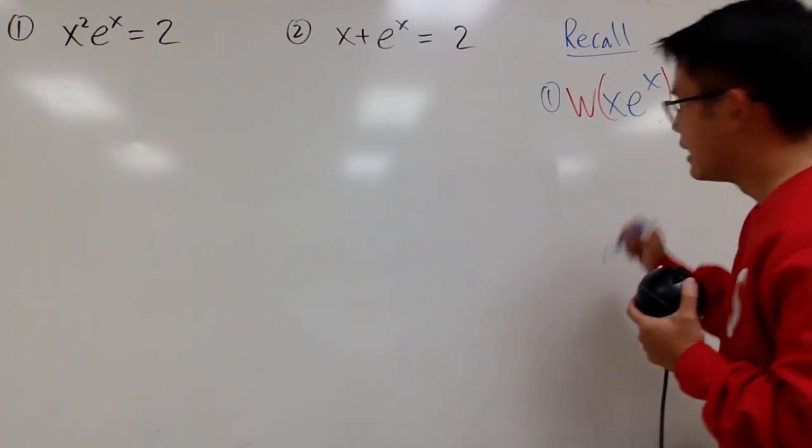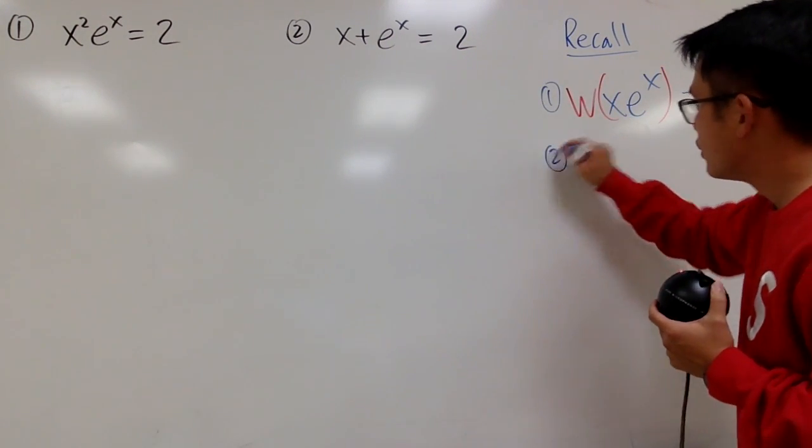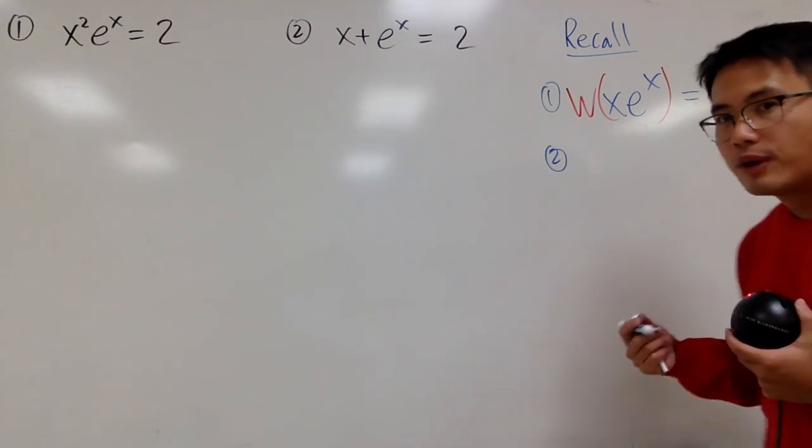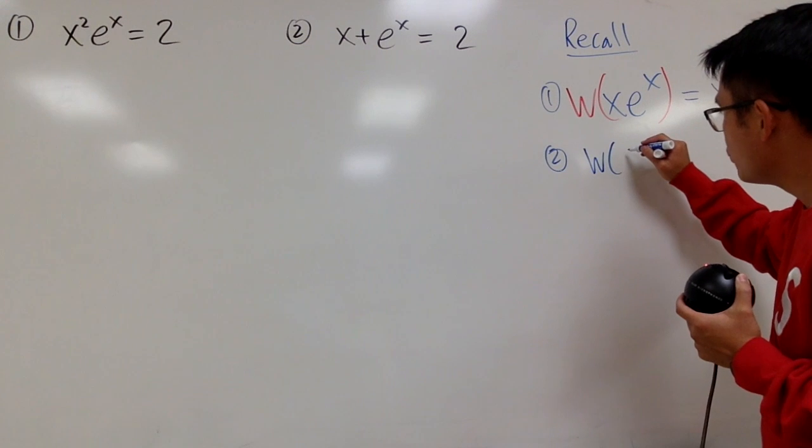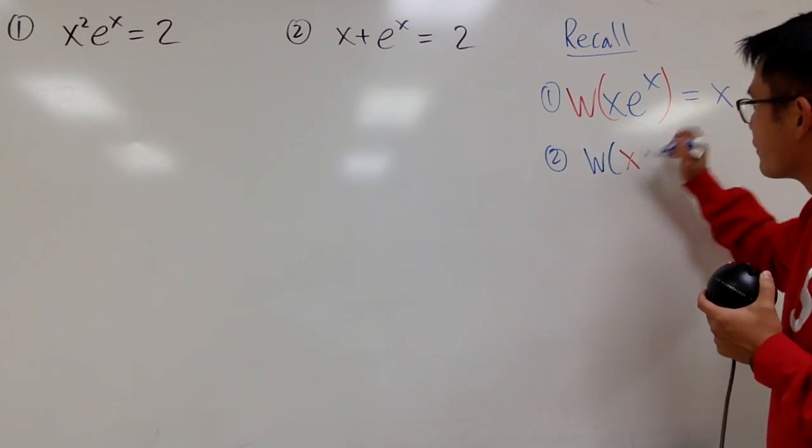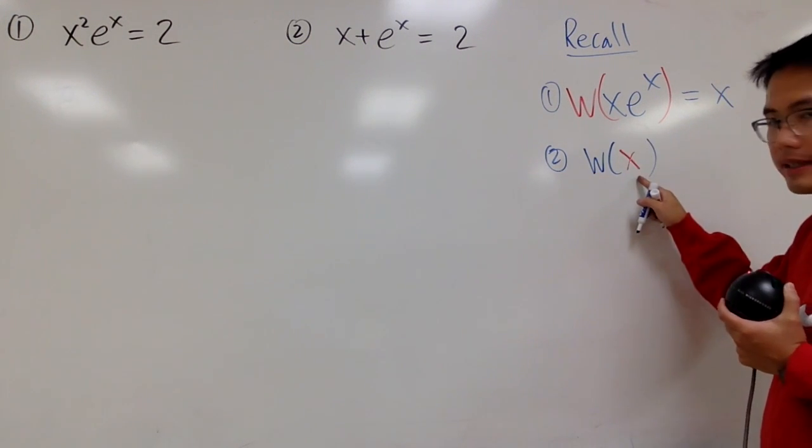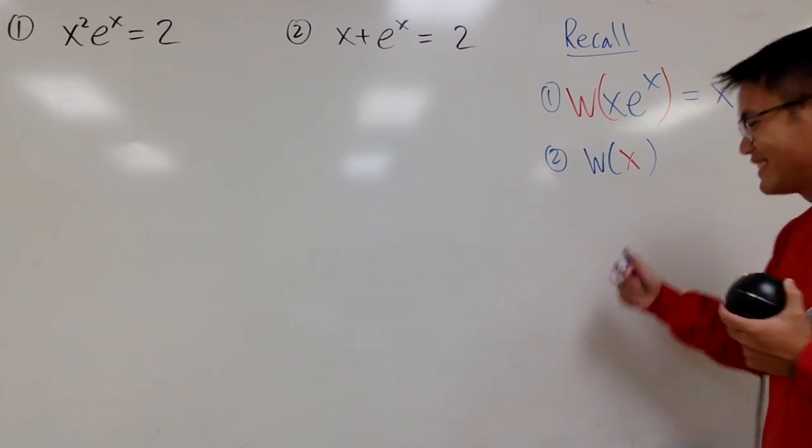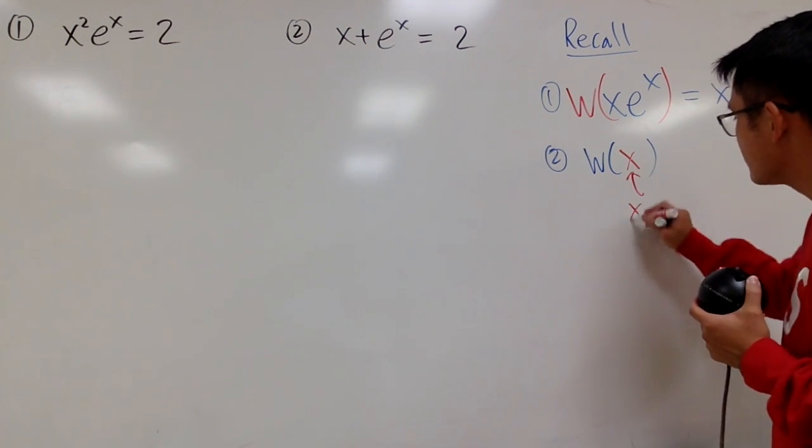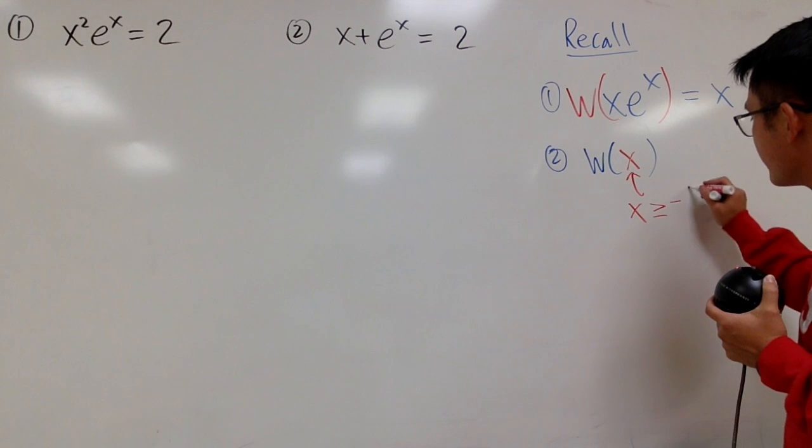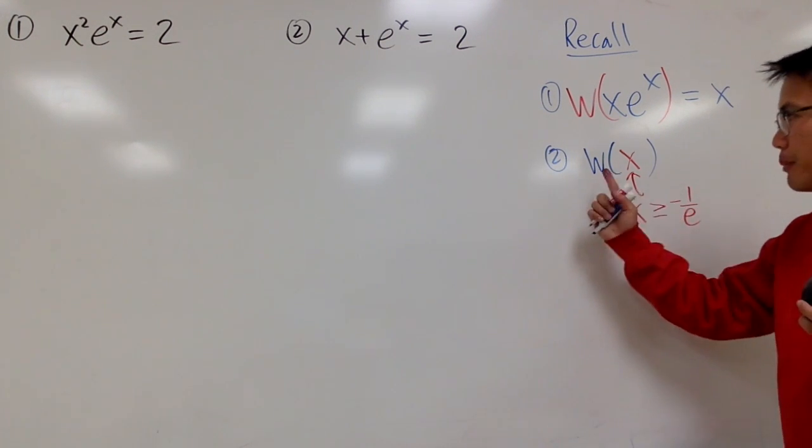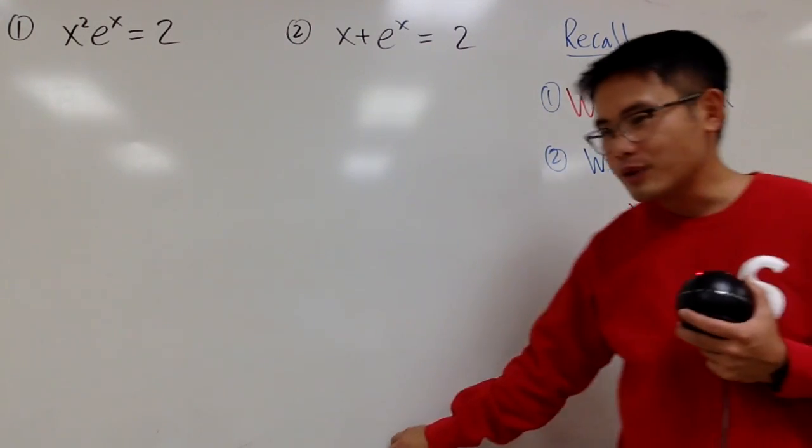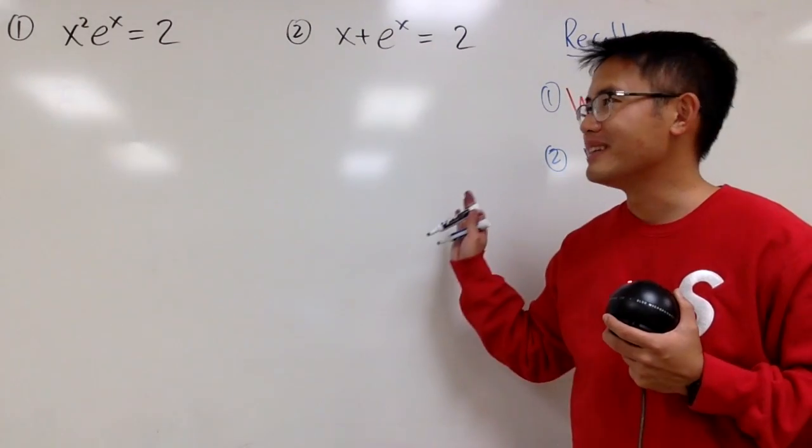And we will be using this a lot. And I will also remind you, in order for us to make sense of the Lambert W function, of course, we will have to talk about the domain. Whenever you have W of x, this only works in the real sense when you have x is greater than or equal to negative 1 over e. This is the domain for the Lambert W function. Of course, we will keep everything real in this video.